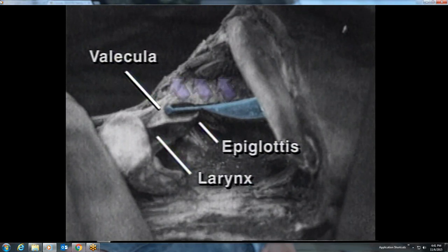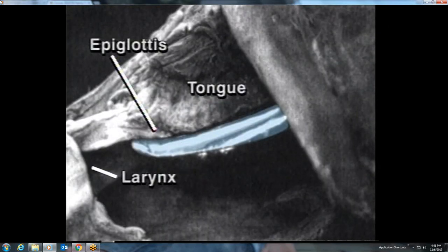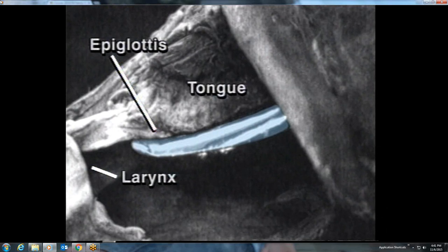Levering backwards on the handle of the laryngoscope can not only cause damage to the teeth, but also worsens the exposure of the larynx, because the tip of the curved blade is then not correctly applied to the vallecula. With the straight blade, the larynx is exposed by directly lifting the epiglottis. Straight blades are recommended in infants and small children, where the epiglottis is relatively large and floppy.